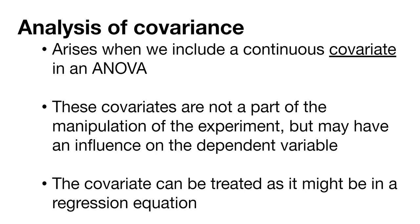What is interesting about the analysis of covariance is that it statistically controls for the effects of other continuous variables that are not of primary interest. We call these covariates — these other variables that are continuous but may not be of primary interest in our experiment. We can treat the covariate like we might in a regression equation: it's a continuous, quantitative value we can use to better inform what our analysis of variance might do otherwise.